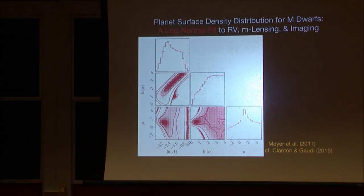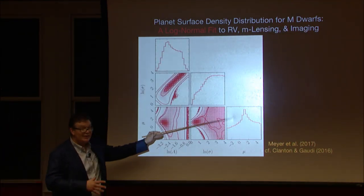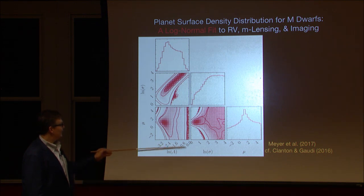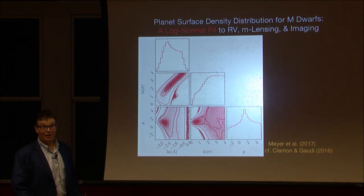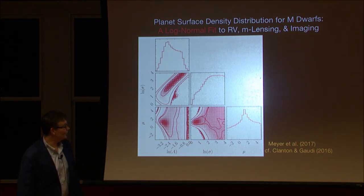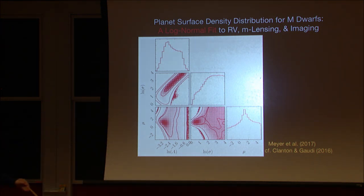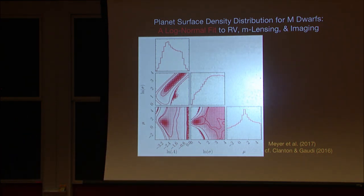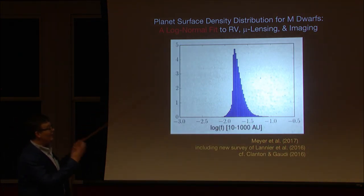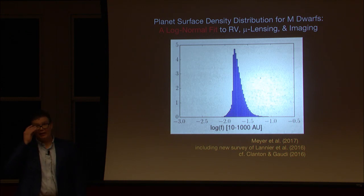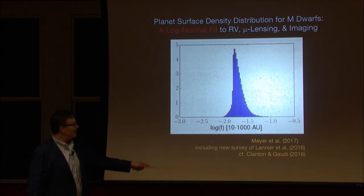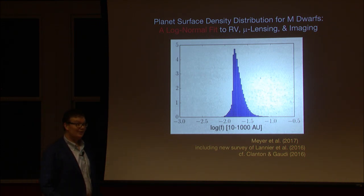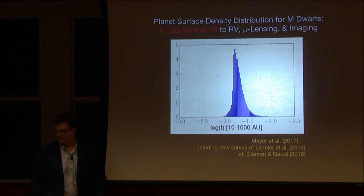Here's the waterfall plot for that fit. The mean is reasonably well constrained, but we have a horrible degeneracy between sigma and the amplitude, and sigma is basically not constrained at all. When you marginalize over all uncertainties, the frequency of 1 to 10 Jupiter-mass planets around M dwarfs over the range of 10 to 1,000 AU is about 2%. So if you're going to look for them, you need a sample of hundreds of stars. That integrated F value of a couple percent compares to A and B star frequencies of 4 to 8%, consistent with the idea that overall gas giant frequency depends on stellar mass.